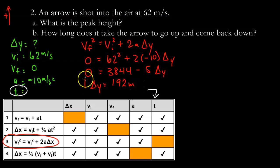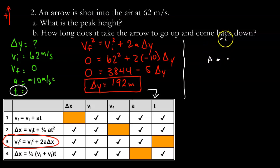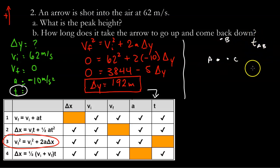So the peak height measured from the ground is 192 meters. Now they want to know how long it takes the arrow to go up and come back down. What I'll do is first find the time to reach the peak height and then double it. If I label the launch point A, the peak B, and the landing C, by symmetry the time from A to C is just double the time from A to B.